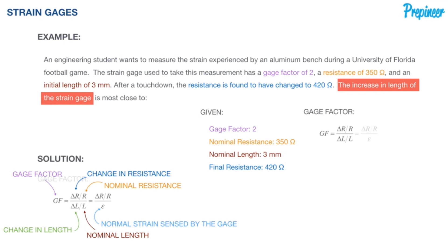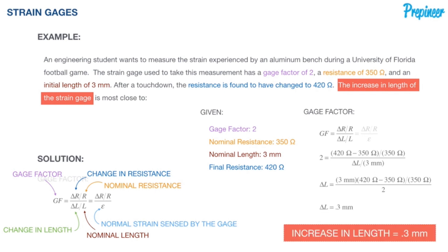Let's go ahead and plug in everything. We've got the gauge factor of 2, then our final resistance minus our nominal resistance divided by our nominal resistance, and our only unknown is delta L. Let's rearrange this formula to isolate delta L and solve for it. We find out that the increase in length of the strain gauge of the metallic film strip within the strain gauge is 0.3 millimeters.